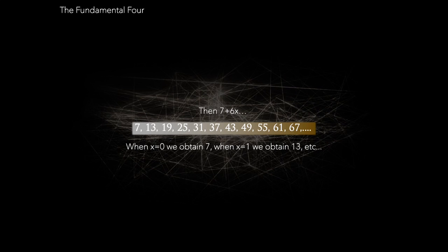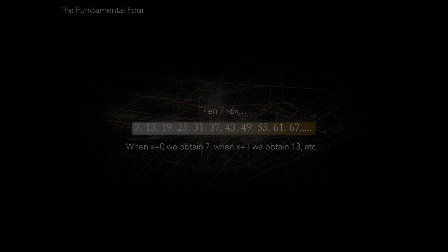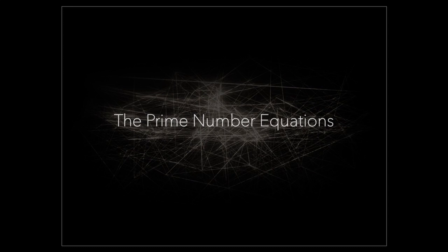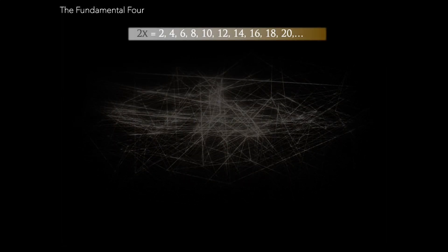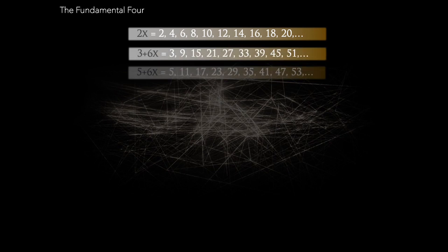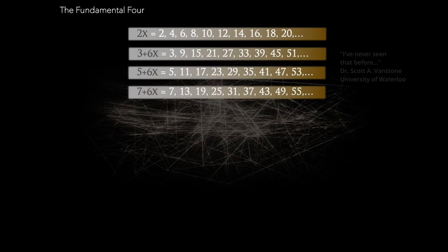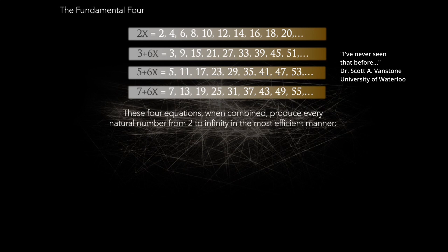These four equations, when combined, efficiently generate every natural number from 2 to infinity. But here's where it gets interesting. 5 plus 6x and 7 plus 6x are special. They create all possible prime numbers except for 2 and 3, which we have already accounted for.